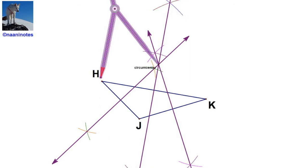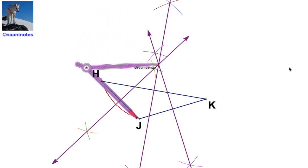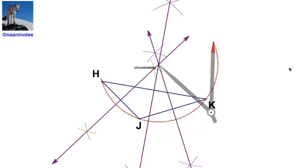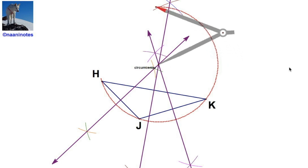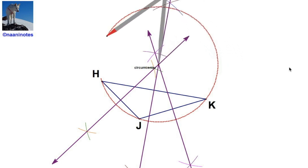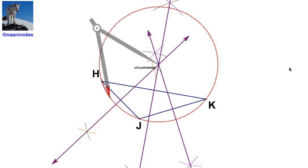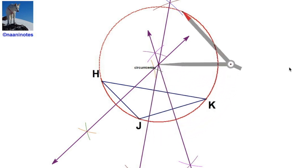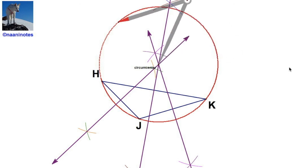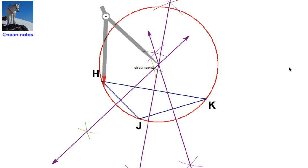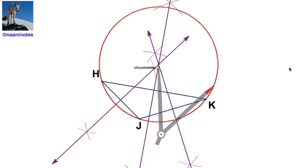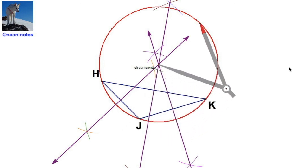Let's trace the circumscribed circle — of course it works. In our three examples we had an acute triangle, a right triangle, and an obtuse triangle, and you can see the difference in all three constructions. But in every case the perpendicular bisectors meet at a single point — the circumcenter. The circumcenter is inside the triangle if it's acute, on the triangle if it's right, and outside the triangle if it's obtuse.